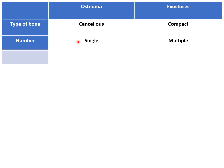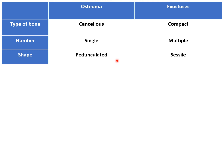Osteoma is single in number, while exostosis they are generally multiple in number. Regarding shape, osteoma is pedunculated, while exostosis has a broad base, i.e. they are sessile.